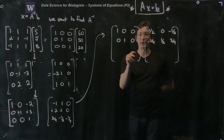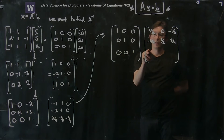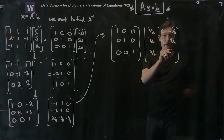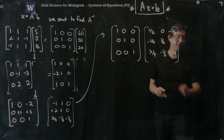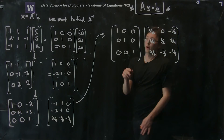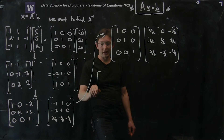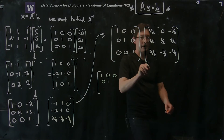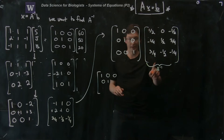The bottom row remains: 0, 0, 1; three-quarters, minus one-half, minus one-quarter. If we did everything correctly, the left-hand side is now the identity matrix. This means the matrix on the right is A inverse.